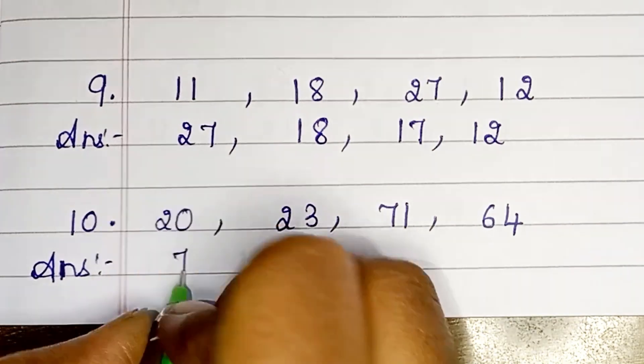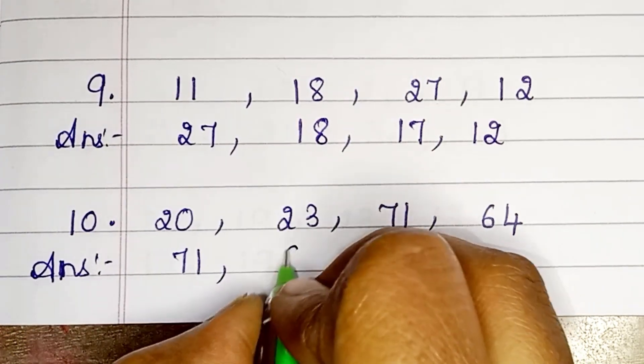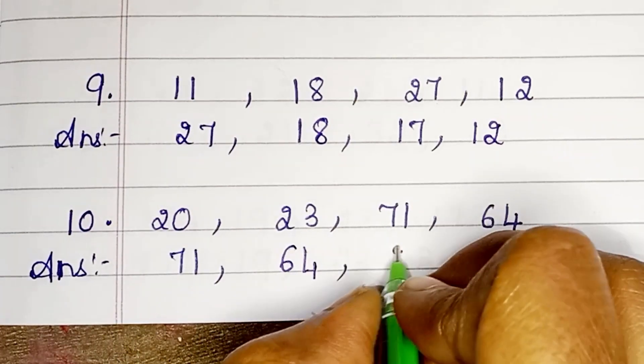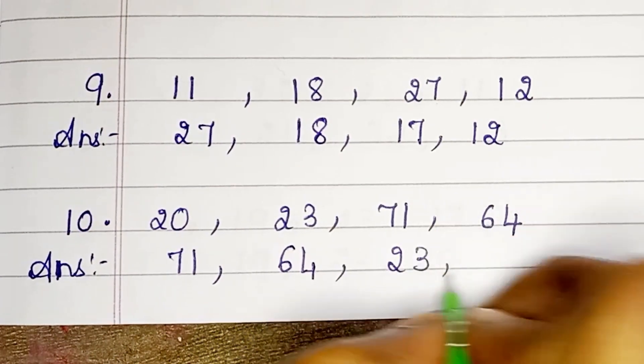Next: 20, 23, 71, 64. In descending order: 71, 64, 23, 20.